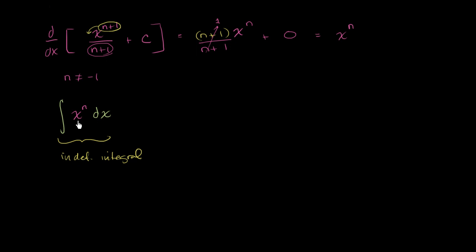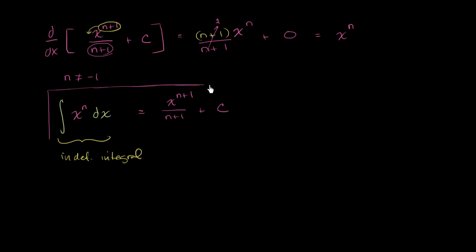This is saying: x to the n is the derivative of what? Well, we just figured out — it's the derivative of this thing. And we've written it in very general terms; we're actually encapsulating multiple constants here. We could have x to the n plus 1 over n plus 1 plus 0, plus 1, plus 2, plus pi, plus a billion. So this is going to be equal to x to the n plus 1 over n plus 1, plus c. This is pretty powerful — you can view this as the reverse power rule, and it applies for any n as long as n does not equal negative 1.